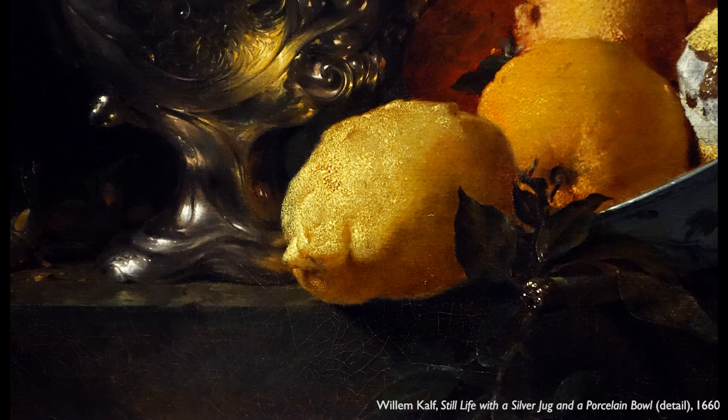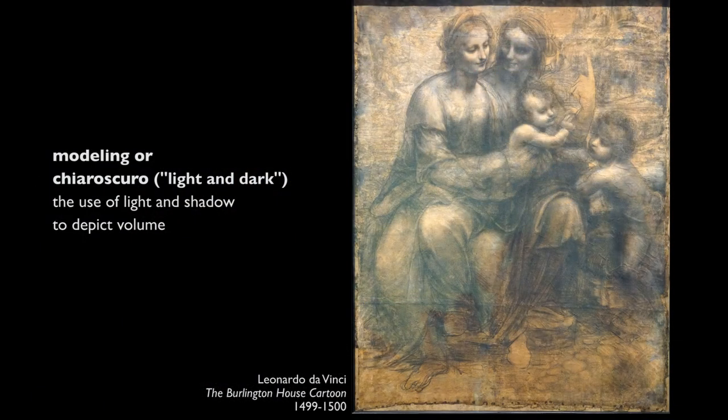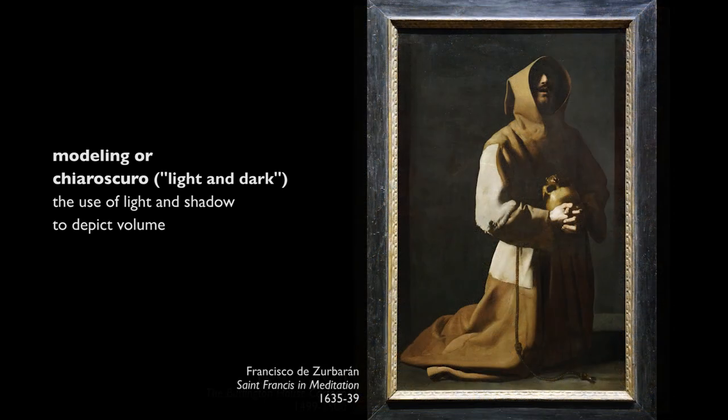If you want your painting or your drawing to look realistic, to look naturalistic, to look like the observable world, then a technique that art historians call modeling or chiaroscuro is critical. Chiaroscuro means simply light and dark, and what we're talking about is the modulation or the transition from light to dark.